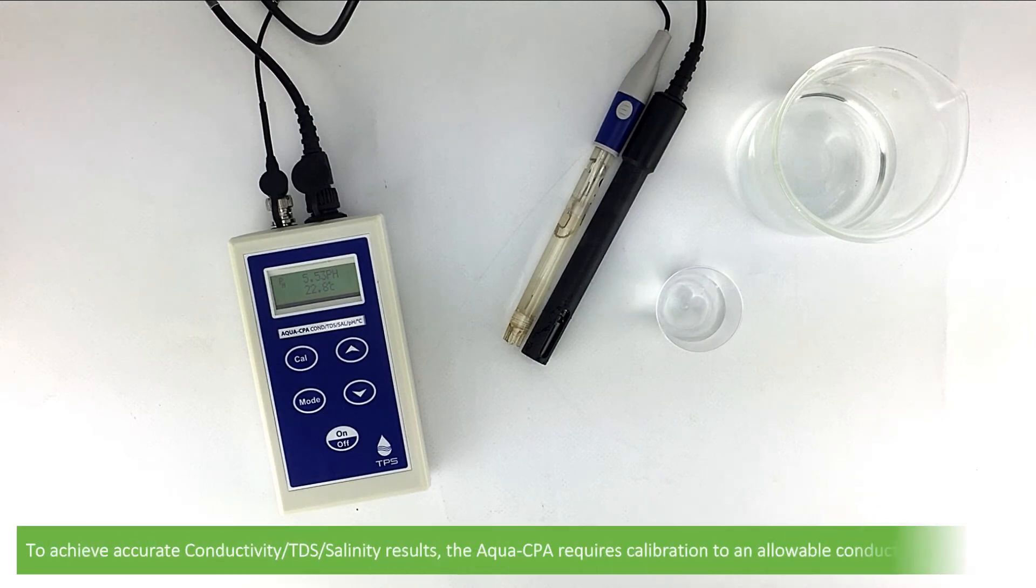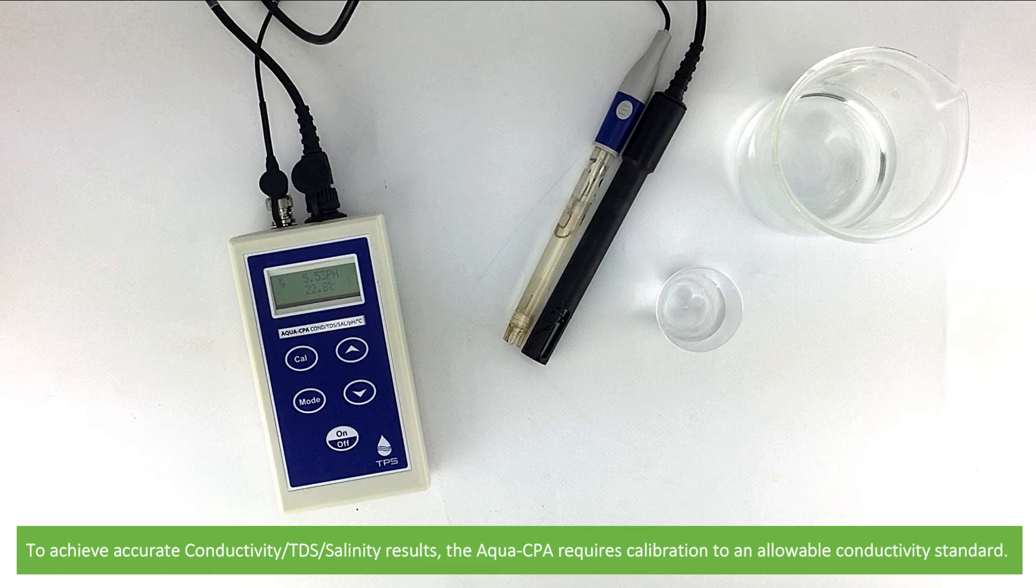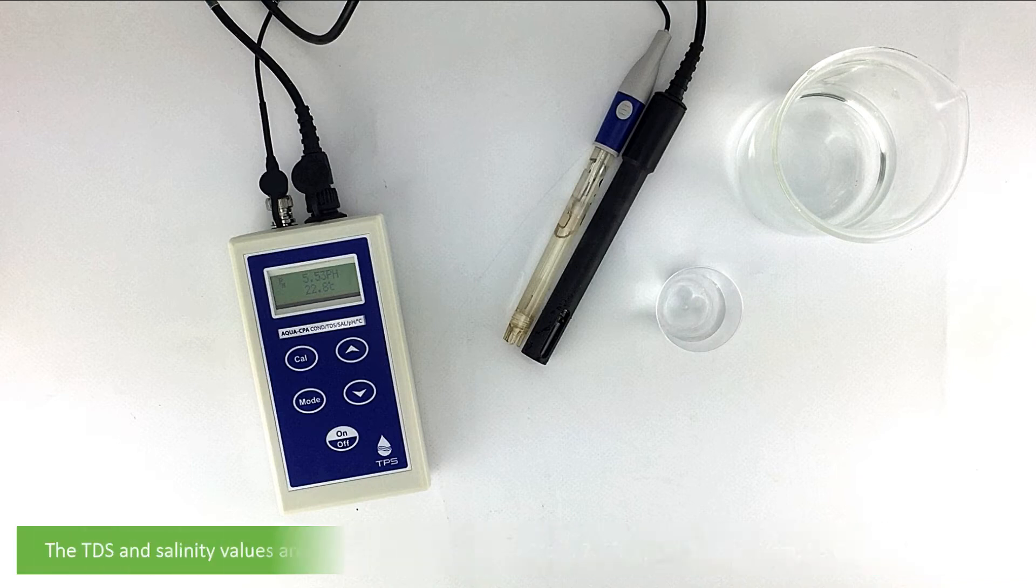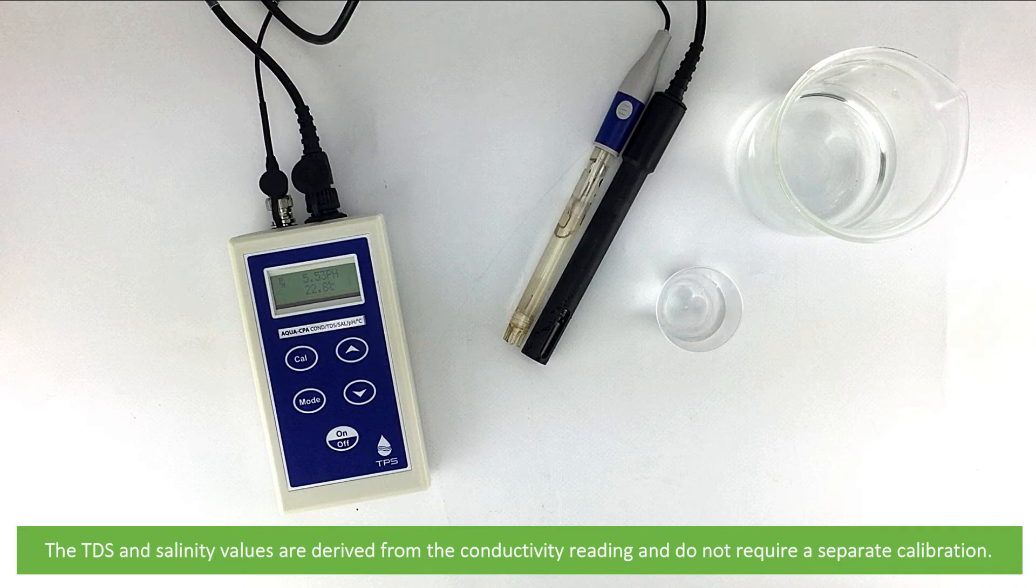To achieve accurate conductivity, TDS and salinity results, the Aqua CPA requires calibration to an allowable conductivity standard. The allowable standards are 150 and 1413 microsiemens per centimetre and 2.76, 12.88 and 58 microsiemens per centimetre.